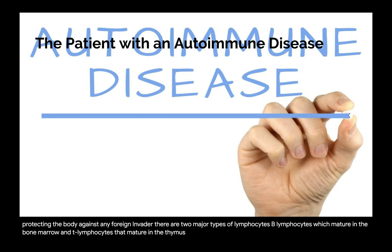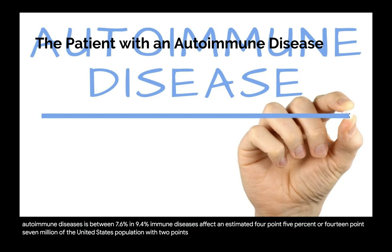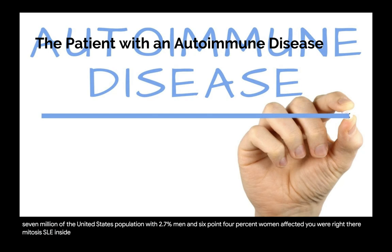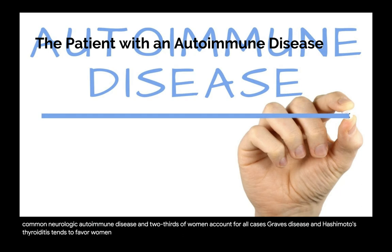The worldwide prevalence of autoimmune diseases is between 7.6% and 9.4%. In the United States, they affect an estimated 4.5%, or 14.7 million people — 2.7% men and 6.4% women. Systemic lupus erythematosus (SLE) and Sjögren's syndrome (SS) affect females versus males at a 9-to-1 ratio. Multiple sclerosis is the most common neurologic autoimmune disease, with two-thirds of cases in women. Graves' disease and Hashimoto's thyroiditis also favor women.